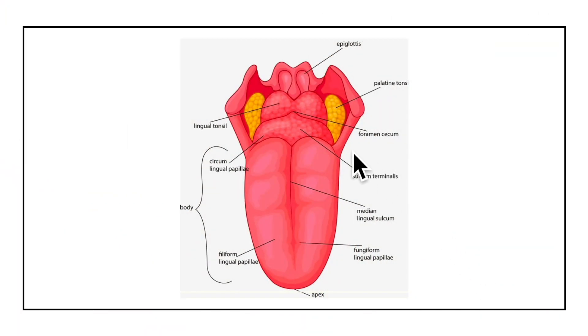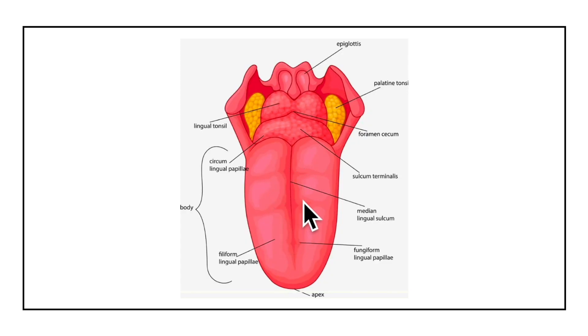Hello friends and welcome to my channel. In this video we'll be learning about the anatomy of the tongue. The tongue is a muscular organ situated in the floor of the mouth. It is associated with the functions of taste, speech, chewing, deglutition, and the cleansing of the mouth. The tongue comprises skeletal muscles which are basically voluntary.